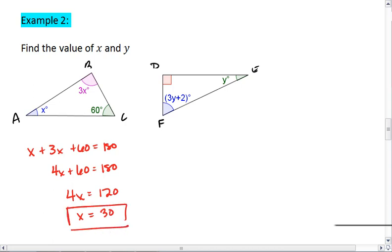Okay, for triangle DEF, remember a right angle implies 90 degrees. So, we have 3Y plus 2 plus 90 plus Y equals 180.